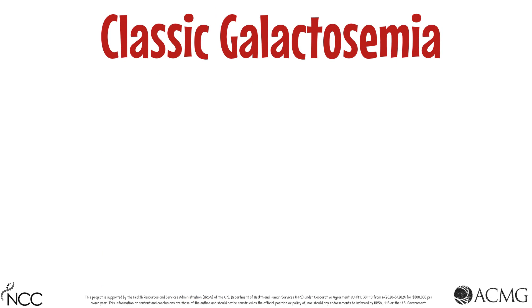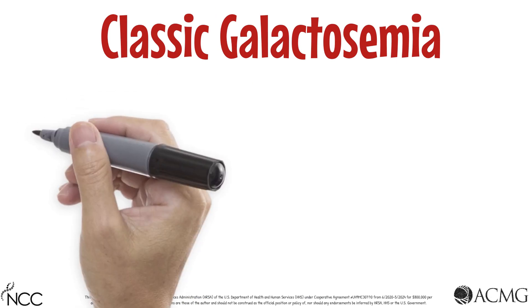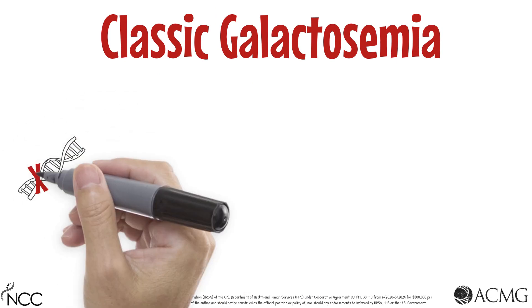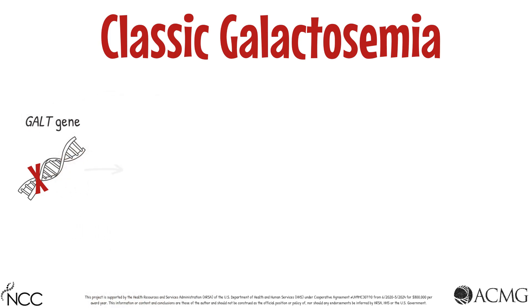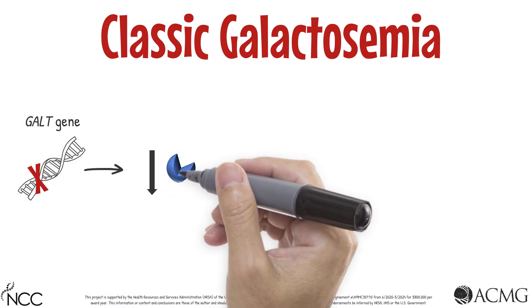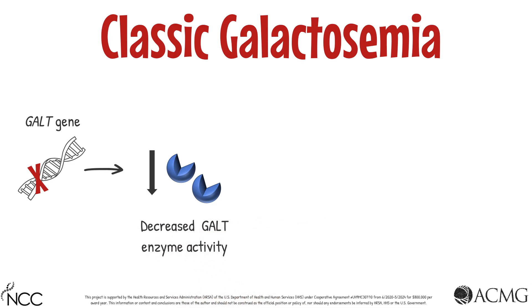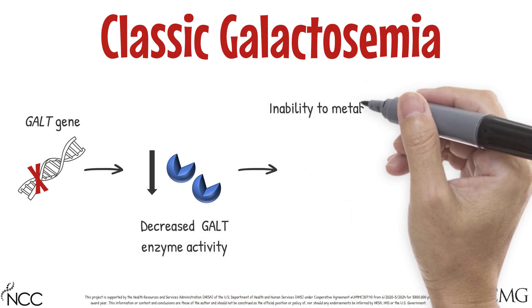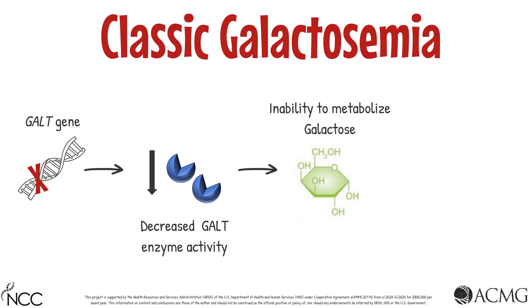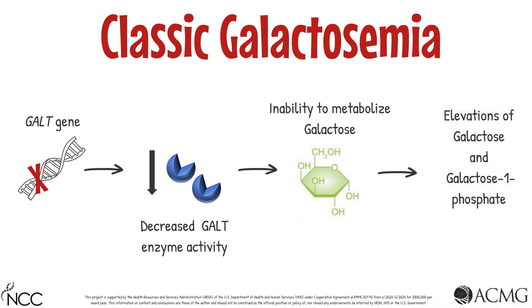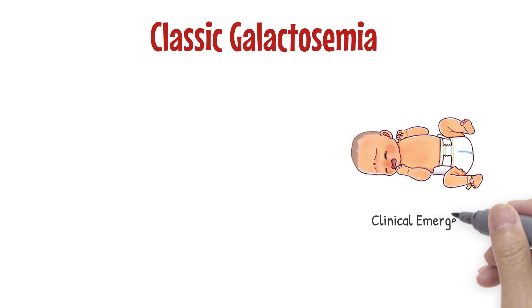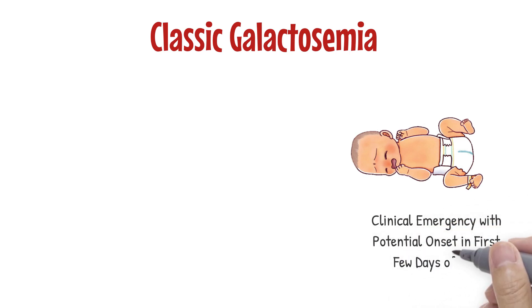Classic Galactosemia is a genetic disorder caused by pathogenic variants found in the GALT gene, which leads to decreased galactose-1-phosphate uridyl transferase enzyme activity and the inability to metabolize galactose, a sugar found in lactose. This results in characteristic elevations of galactose and galactose-1-phosphate. Classic Galactosemia can present as a clinical emergency in the first few days of life and may be fatal without treatment.